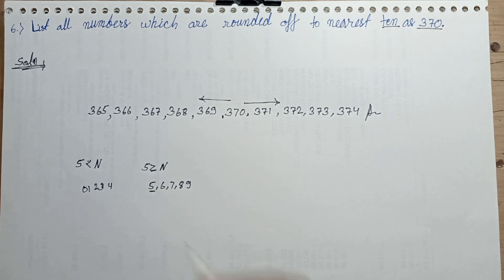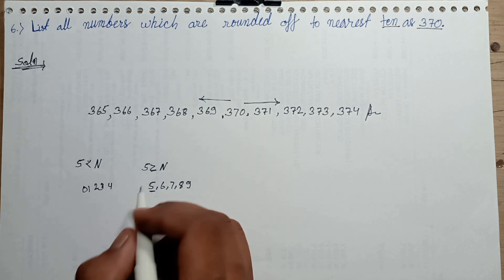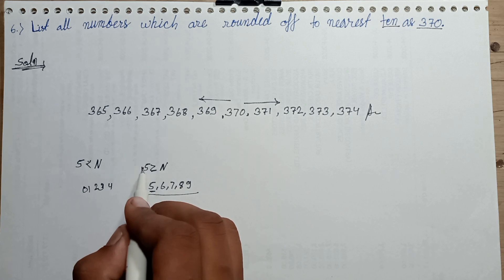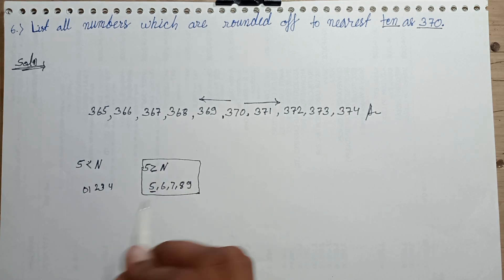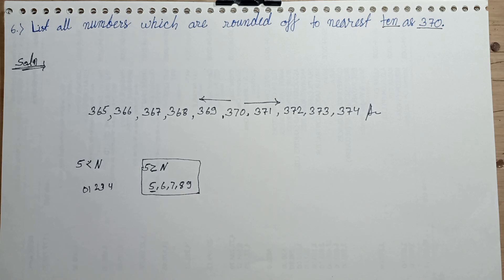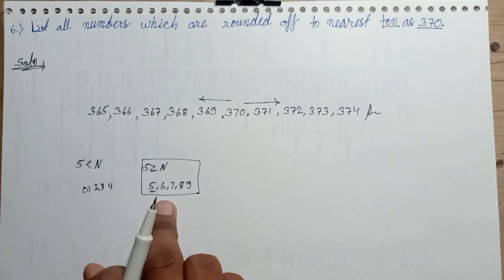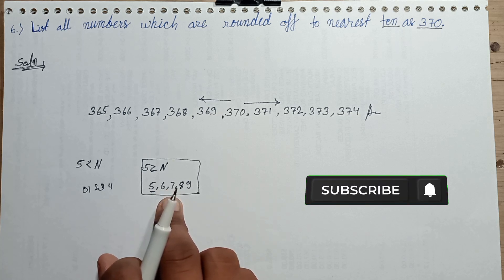5 is occupying this space in the greater than numbers, not lesser than. Using this digit with increasing order, this digit using with decreasing order.